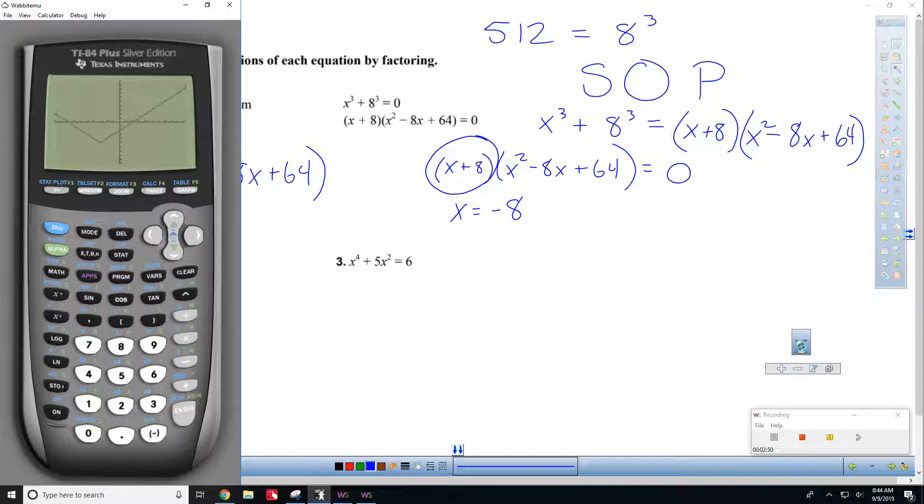So y equals clear x squared minus 8x plus 64. Let's graph it. All right, so it's off the charts. Let's see, we could like go zoom, fit maybe. Watch down here. And that'll just fit it to some graph.